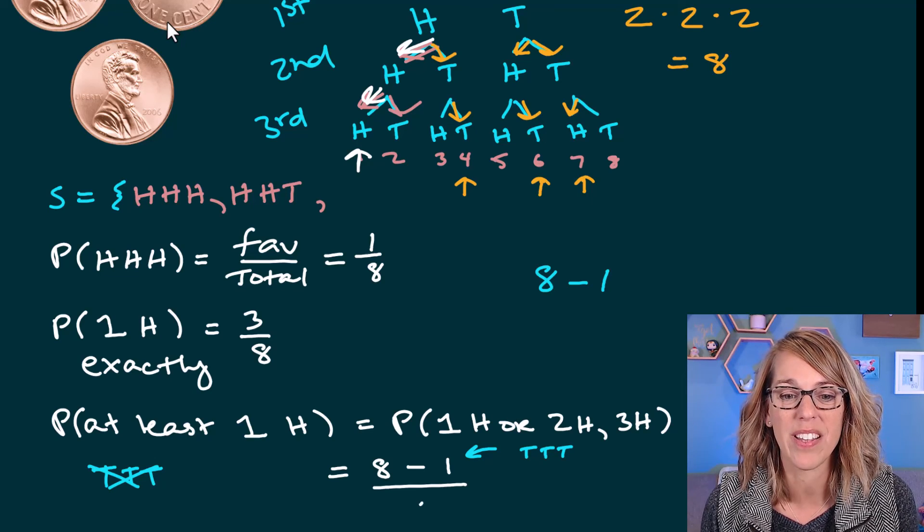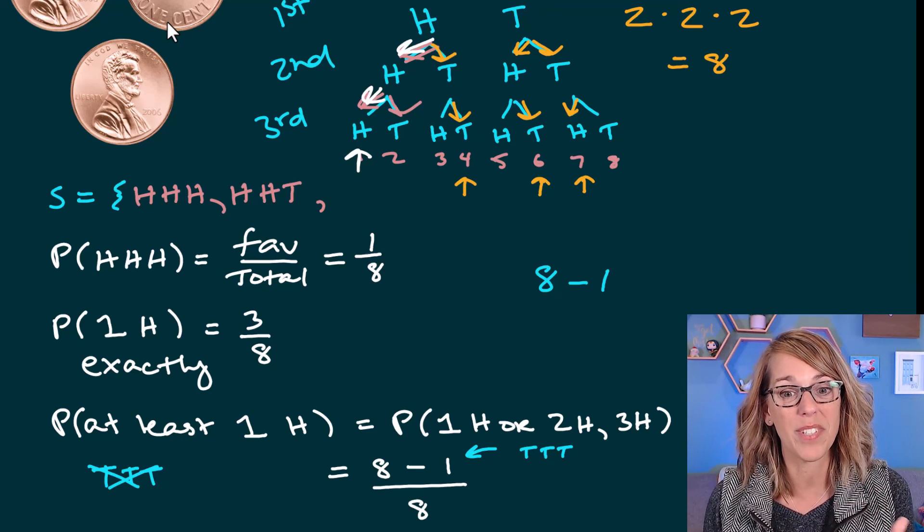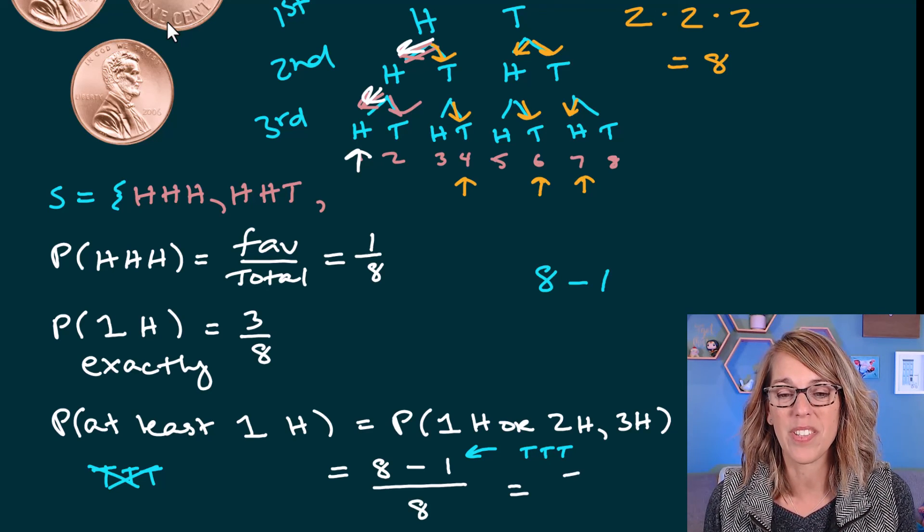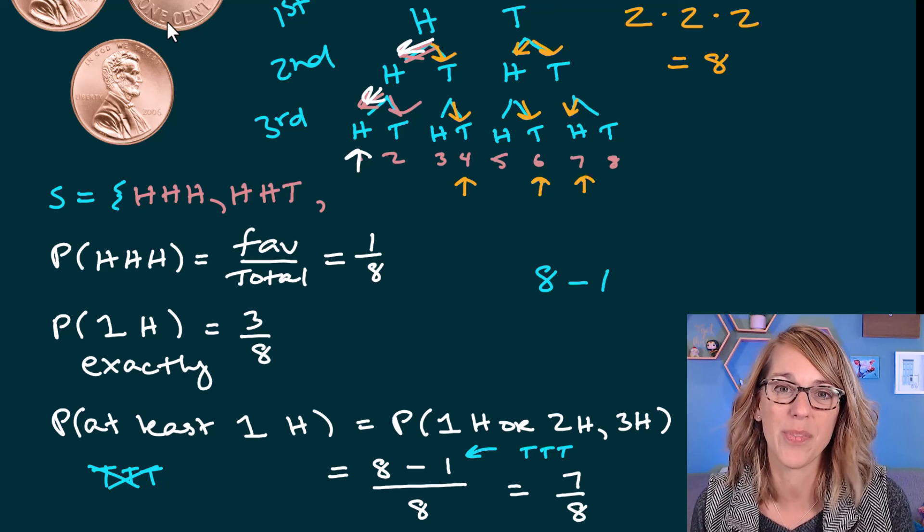Such a nice way to do this one. The number of favorable outcomes is still eight. So I end up with seven divided by eight for this one.